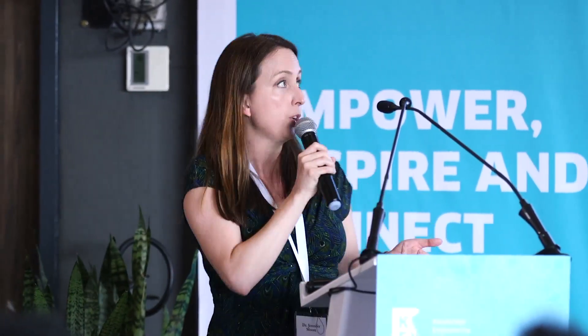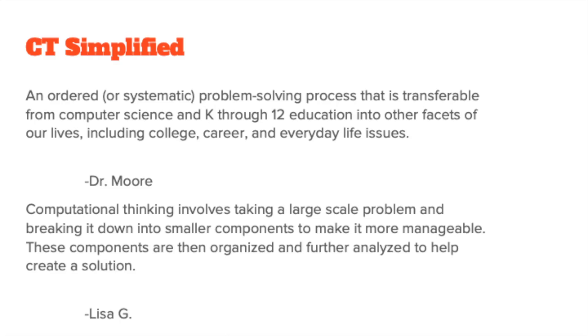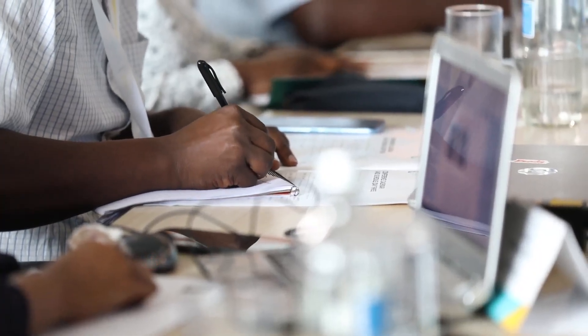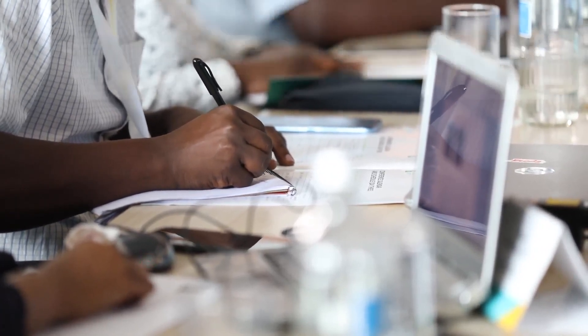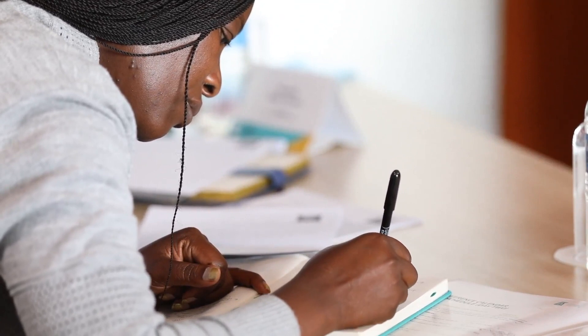I created my own definition: computational thinking is an ordered or systematic problem-solving process that is transferable from computer science to K–12 education and other facets of our lives including college, career, and everyday life. One of my students, Lisa German — now a fabulous librarian — emailed me and said my definition was missing something. She improved it: computational thinking involves taking a large-scale problem, breaking it into smaller components to make it more manageable, then organizing and analyzing those components to create a solution.